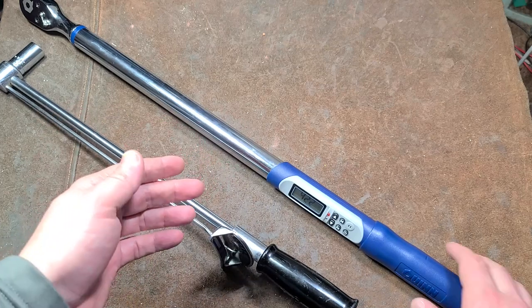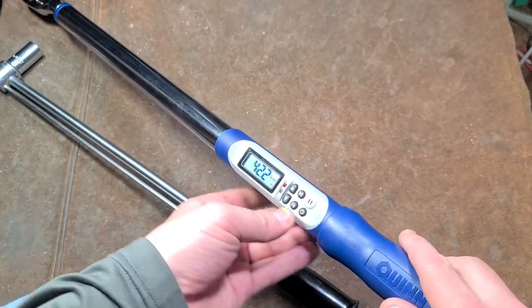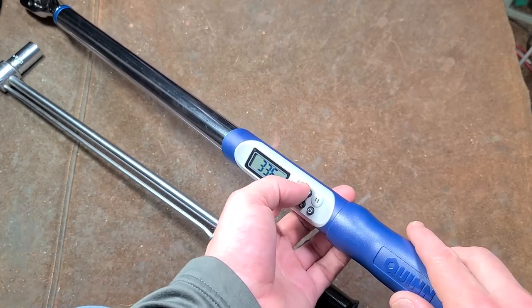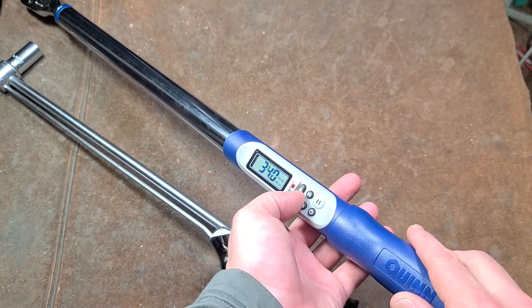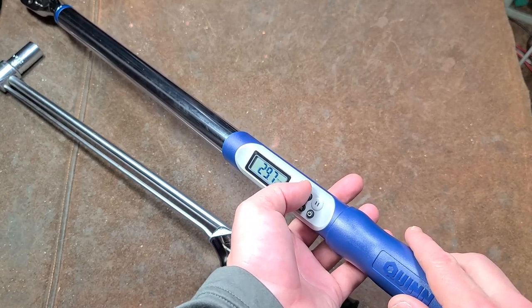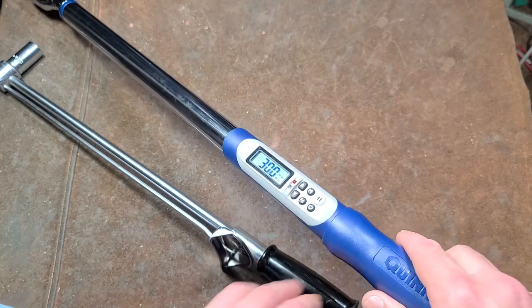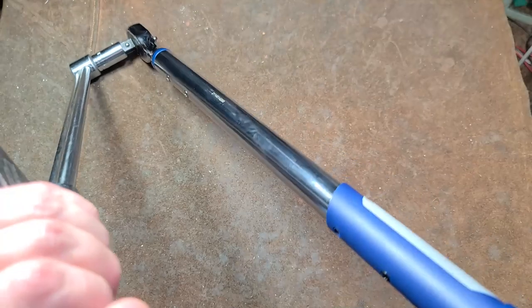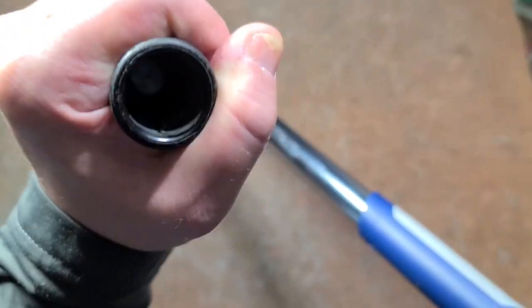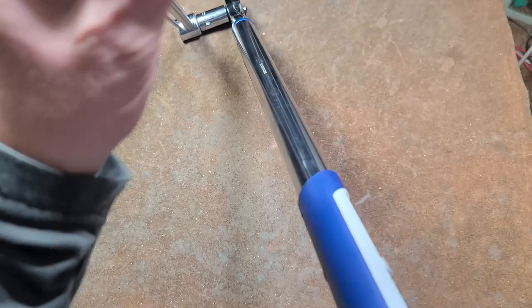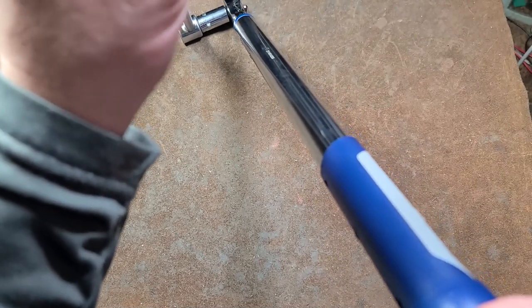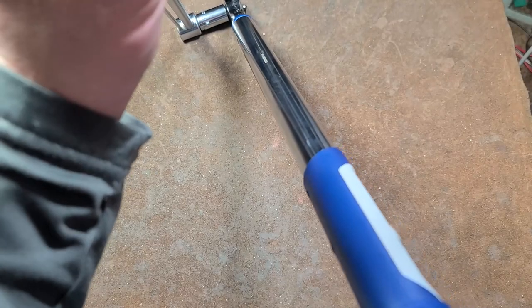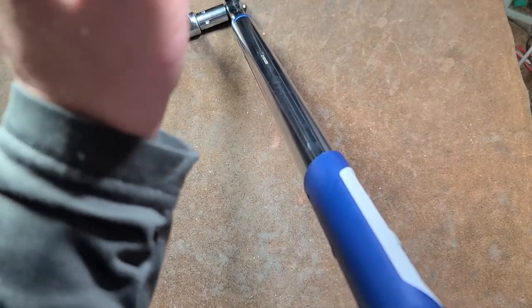I understand why people like these torque wrenches specifically because of the way it beeps. I mean I'll go down to 30 foot pounds. Because that can be a real advantage where the click types are just fine but the beep is really pretty loud, pretty easy to know that you're getting there. That's why it beeps fast when you're getting close to the value so you can be real careful. I got it at 30 now.